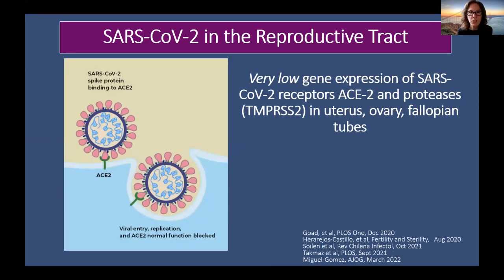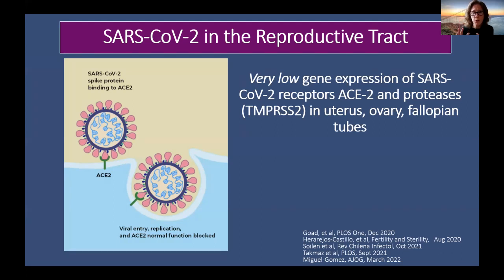The vaccines do not contain mRNA for syncytin-1, so you cannot develop antibodies against this protein, and antibodies developed against the spike protein do not impact syncytin-1. There is no biologic basis for vaccines impacting female fertility, and multiple studies confirm this. The second issue is whether SARS-CoV-2 could enter the reproductive tract. The ACE2 receptor, critical for coronavirus cell entry, is expressed in the uterus, ovary, and fallopian tubes — but at very, very low levels, and those tissues lack the co-expressed proteases required for viral entry.